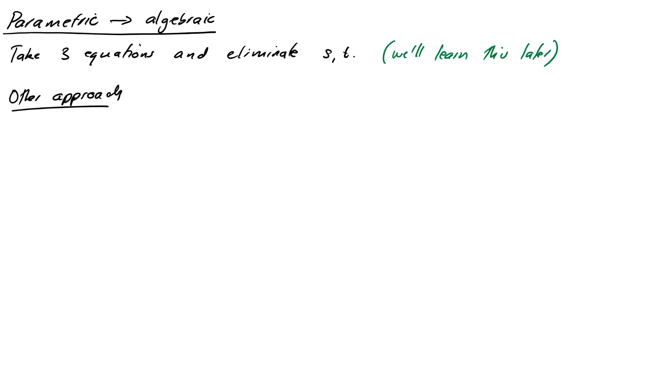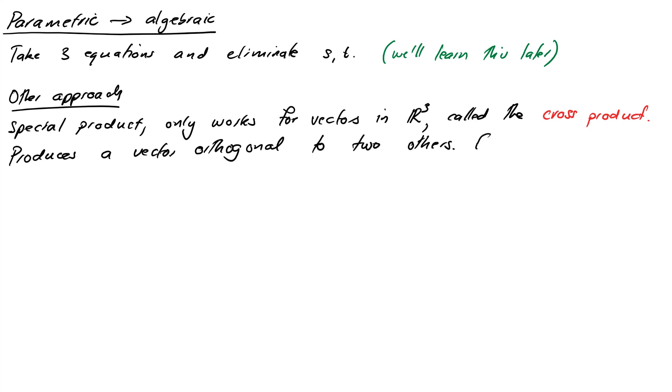Now this one's a wee bit trickier because essentially we've got to take our three parametric equations and eliminate S and T from them. Now we're going to learn a systematic way of eliminating variables soon in the course, so I'm not going to go into great detail about how to do that exactly. But it turns out there is another way and it's a slightly strange one because it only works for vectors in R3. So there's a special product called the cross product of two vectors and what it does is to produce a vector that's orthogonal to two others.